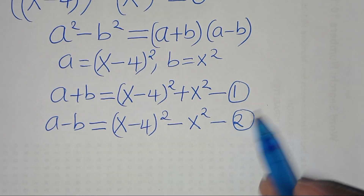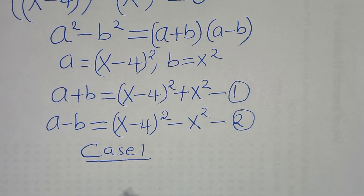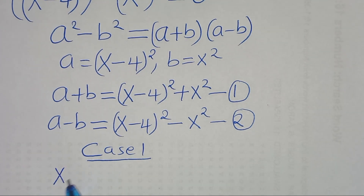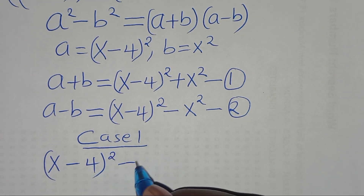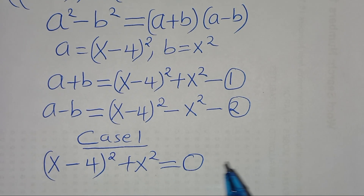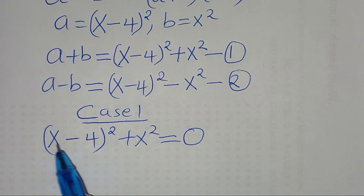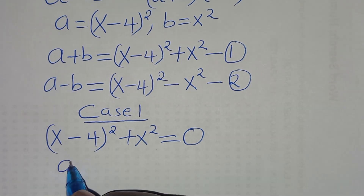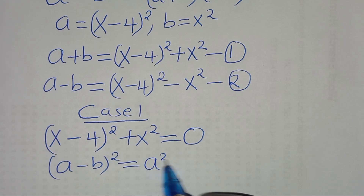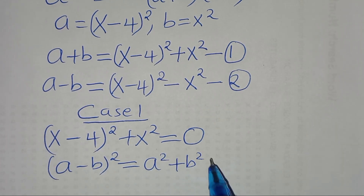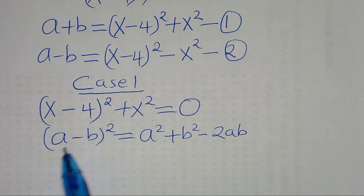Let's solve equation 1 as case 1. We have (x minus 4)² plus x² equals 0. Expanding (x minus 4)² using the identity (a − b)² = a² + b² − 2ab: